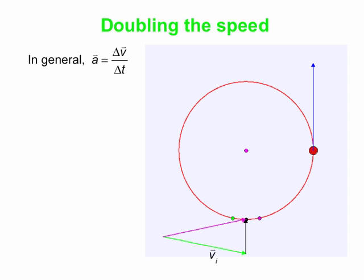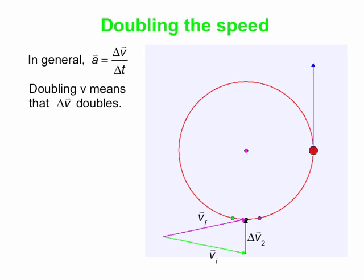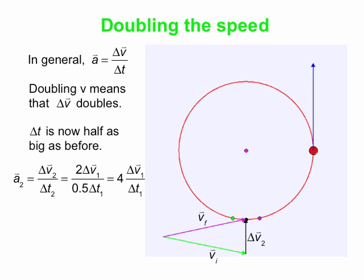So if we double the speed, does that mean we double the acceleration? Well, delta V is doubled, but we've also changed delta T. Delta T is the time for the object to move from the green point to the purple point. Those two points are the same distance apart as before, but the object is going twice as fast, so it only takes half as long. We've doubled delta V and halved delta T, giving us an overall factor of 4. Our new acceleration is 4 times bigger than the old. And if we triple the speed, the acceleration is 9 times bigger. So in general, acceleration goes as V squared. Double V: acceleration increases by a factor of 4, that is 2 squared. Acceleration is proportional to V squared.